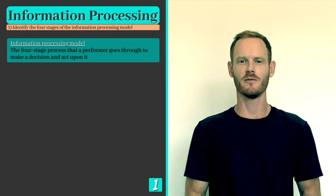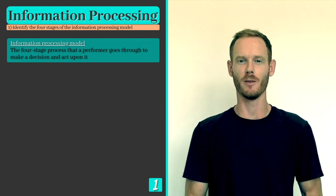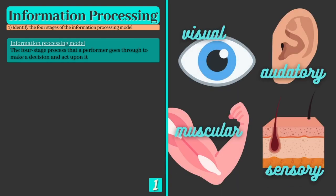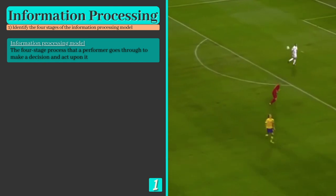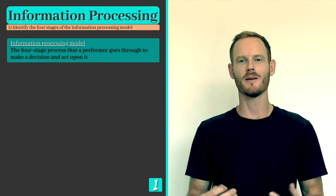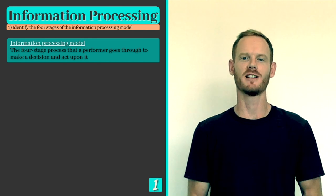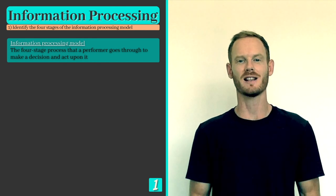In order to be successful in sport you need to be able to process information from your environment and make good decisions based on that information. Information can be received via the eyes, ears, skin and muscles, and successful athletes are able to select only the most relevant pieces and respond quickly and effectively. In order to better understand the decision making process in sport we need to refer to the Information Processing Model, which has four separate stages.